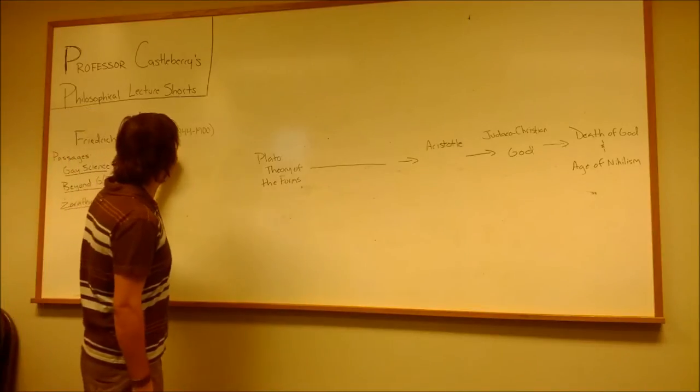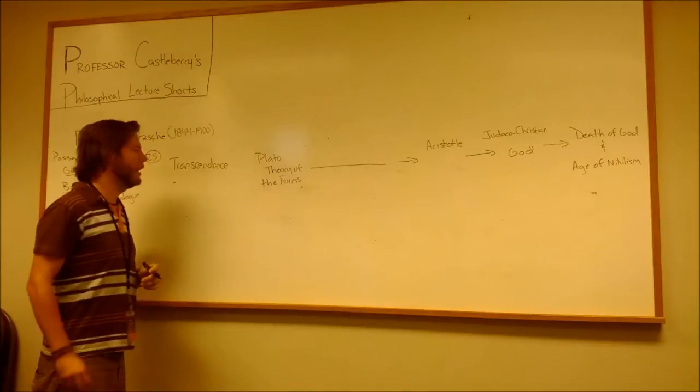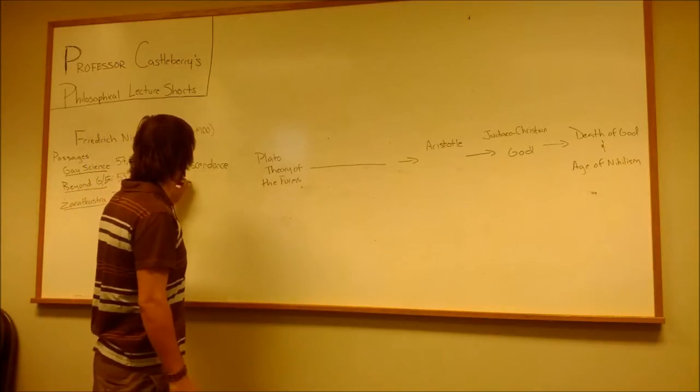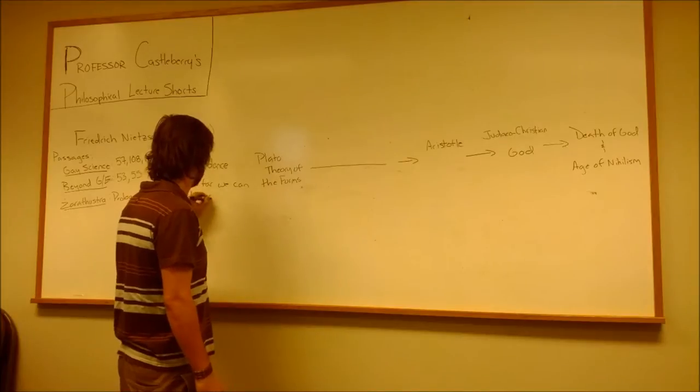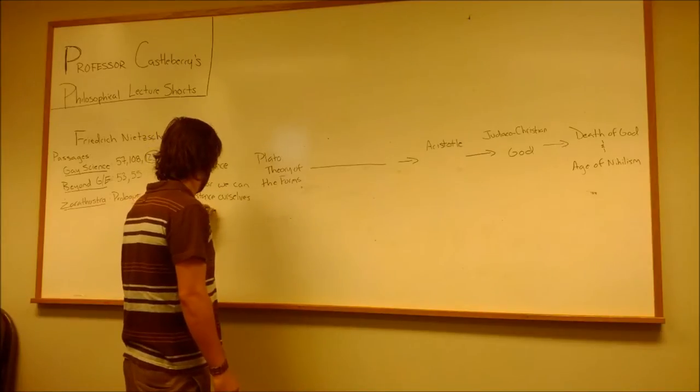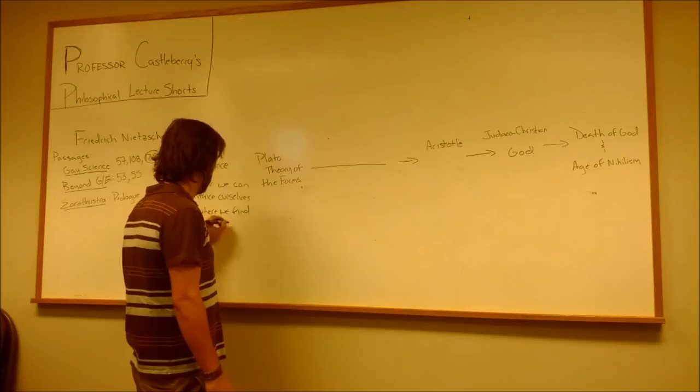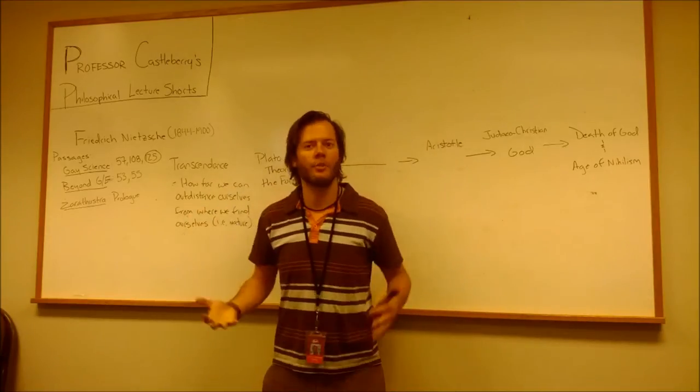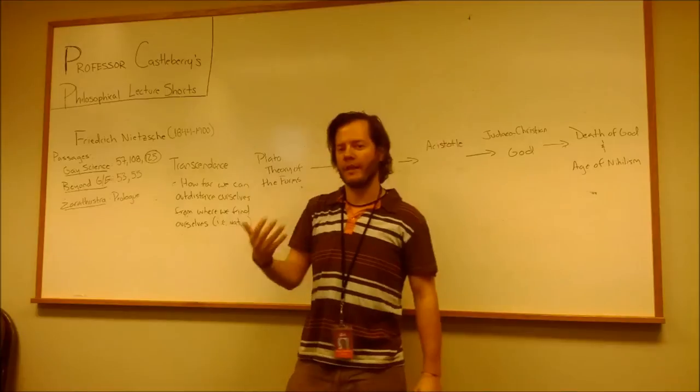And his critique basically begins here. And that's what we're going to concentrate on in the first video, his critique of Western culture. He thinks that since Plato, Western culture has been obsessed with this idea of transcendence. And what that basically means is transcendence is this idea of trying to get outside of ourselves to some higher level, some higher plane. Transcending something.